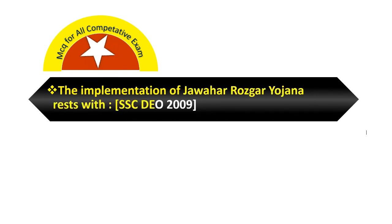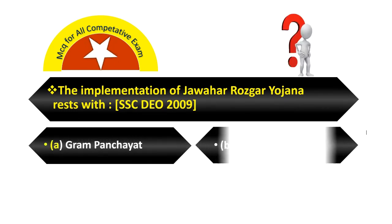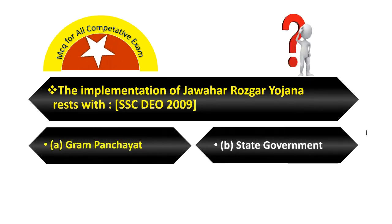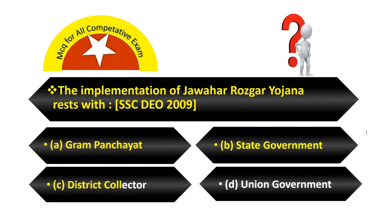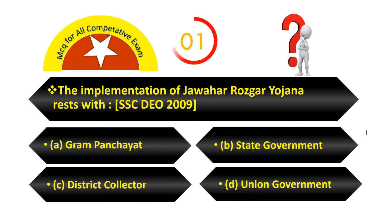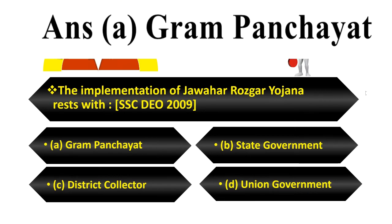The implementation of Jawahar Rajgar Yojana rests with: Option A, Gram Panchayat. Option B, State Government. Option C, District Collector. Option D, Union Government. Your answer is Gram Panchayat.